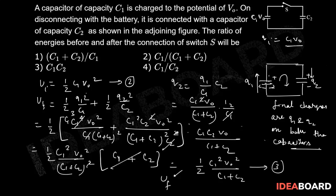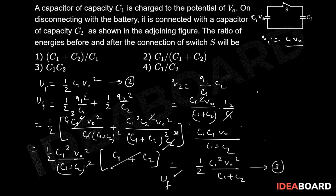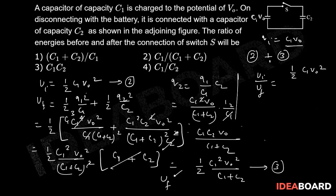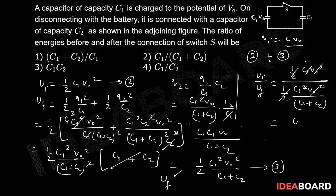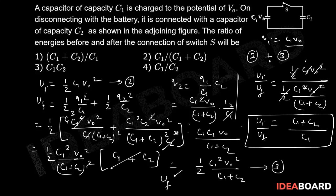Now we take the ratio. U_initial / U_final = [½·C1·V0²] / [½·C1²·V0²/(C1 + C2)]. The ½ and V0² cancel, and one power of C1 cancels, giving U_initial / U_final = (C1 + C2) / C1. So the correct answer is option 1: (C1 + C2) / C1.